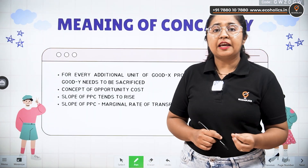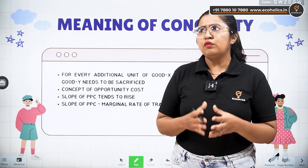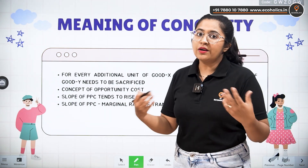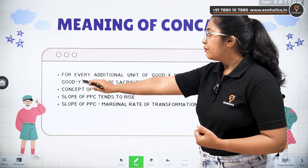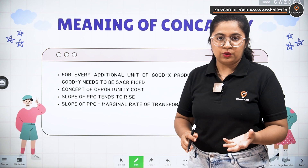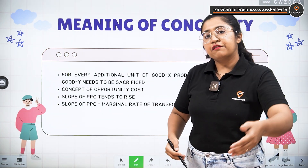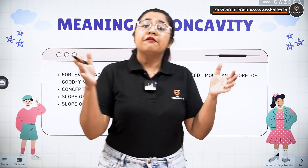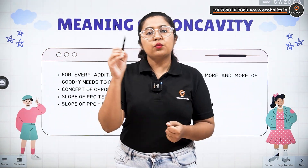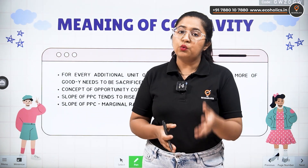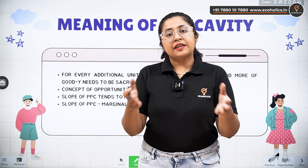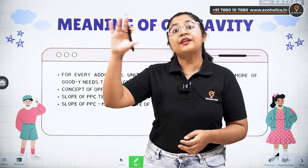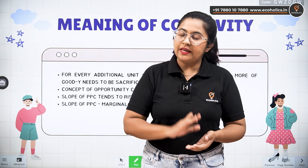When we talk about the concavity of the Production Possibility Curve, we need to focus on certain principles associated with the PPC. The PPC talks about every additional unit of good X — for every additional unit of commodity X, more and more of commodity Y has to be sacrificed. The PPC represents the combination of two goods in an economy which can possibly be produced with the available resources.